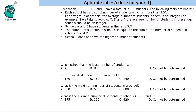Hello everyone, welcome to Aptitude Jab. This is a number puzzle. There are six schools A, B, C, D, E, and F with a total of 2100 students. Each school has a distinct number of students which is more than 100, so all schools have different numbers of students.